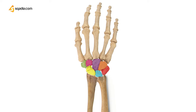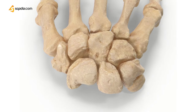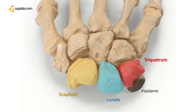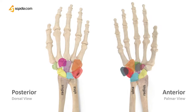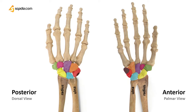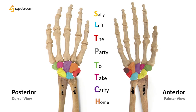Just as an overview, the carpal bones are named as scaphoid, lunate, triquetrum, and pisiform lying proximally, while trapezium, trapezoid, capitate, and hamate are lying distally. We also have a super easy mnemonic for you to help memorize these bones: Sally left the party to take Cathy home.